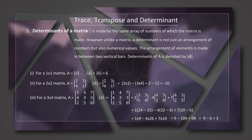That is: 1 into (3 into 8 minus 3 into 5) equals 24 minus 15. Minus 4 into (4 into 8 minus 3 into 2) equals 32 minus 6. Plus 7 into (4 into 5 minus 3 into 2) equals 20 minus 6.